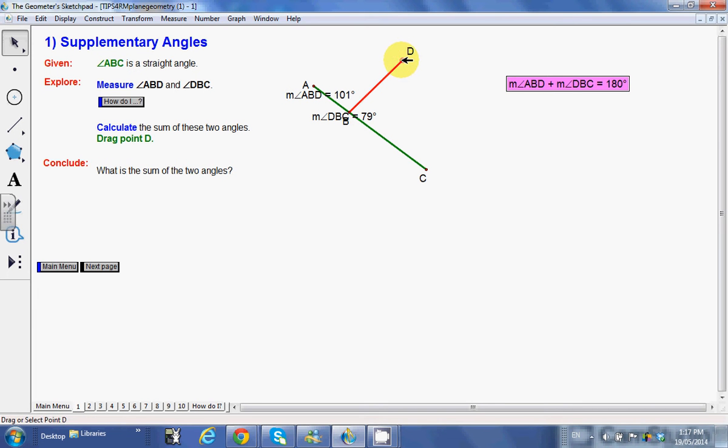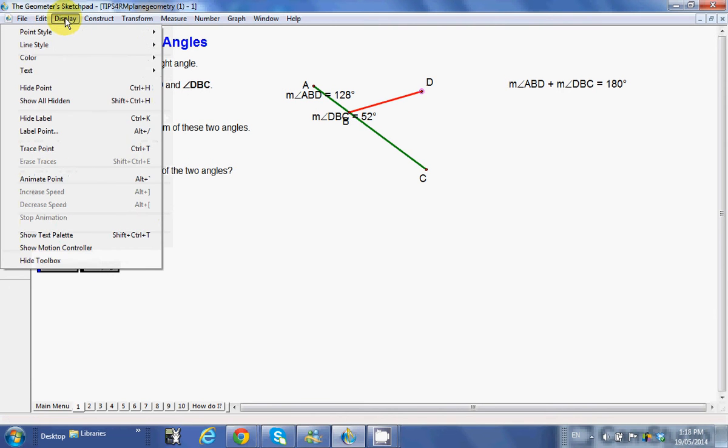So it's saying the sum now is 180. Is that always true? So what we can do is we can actually click on D and actually just move D around. We can actually have the program so again, if you stop anywhere, 128 plus 52, of course it's saying it over here as well that it's 180.